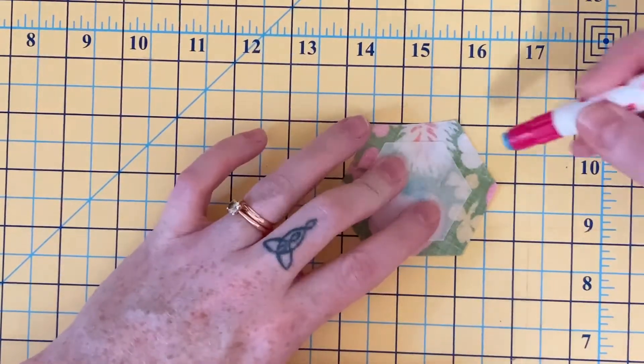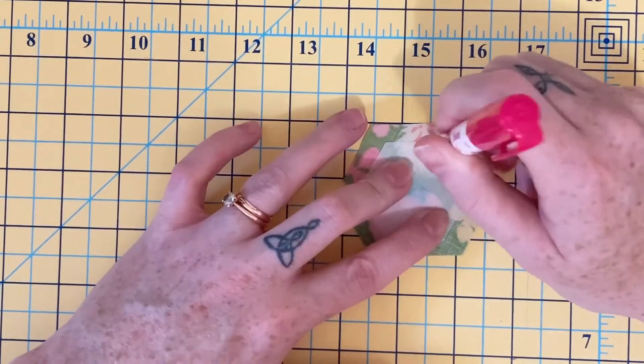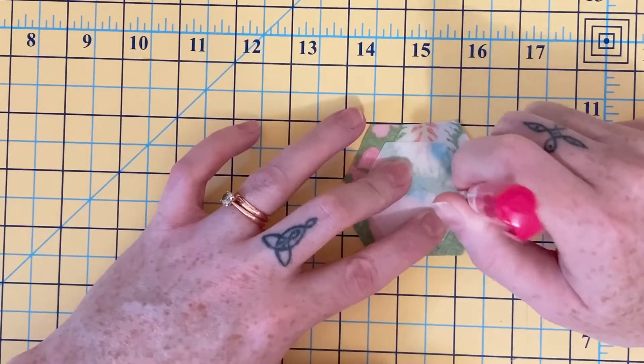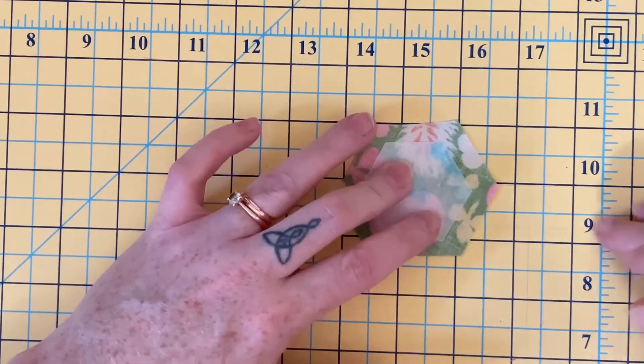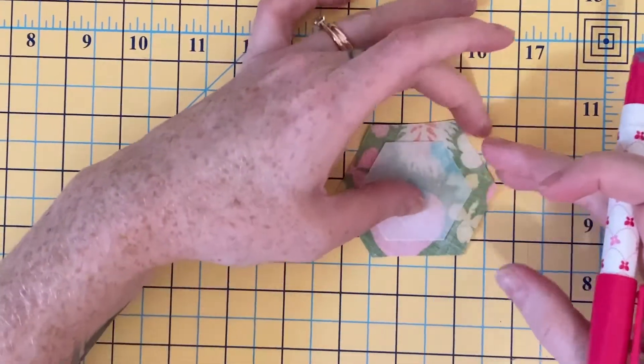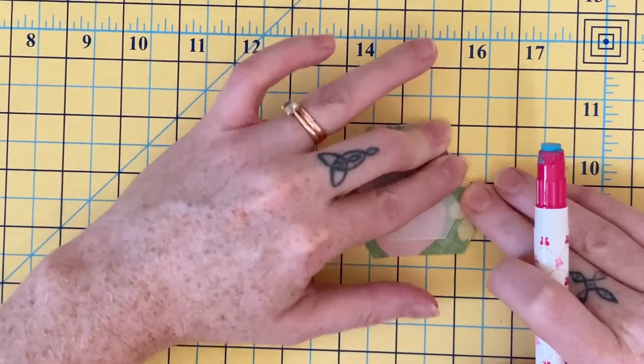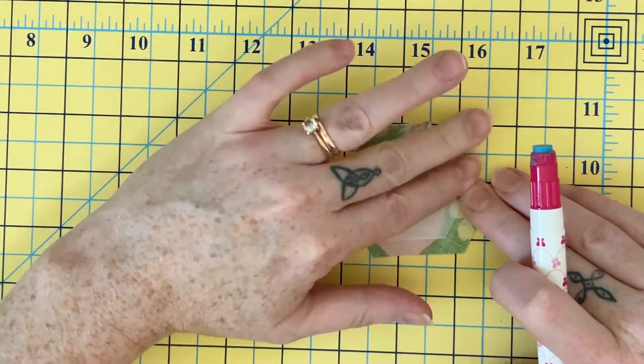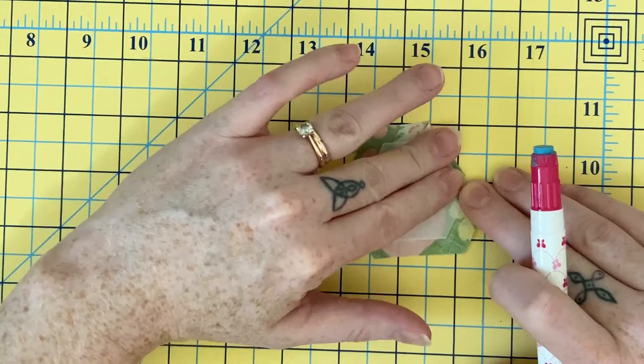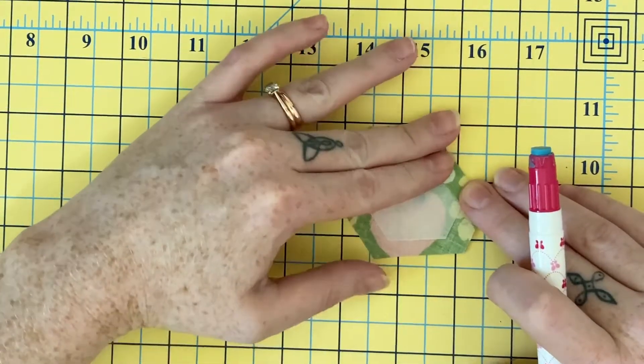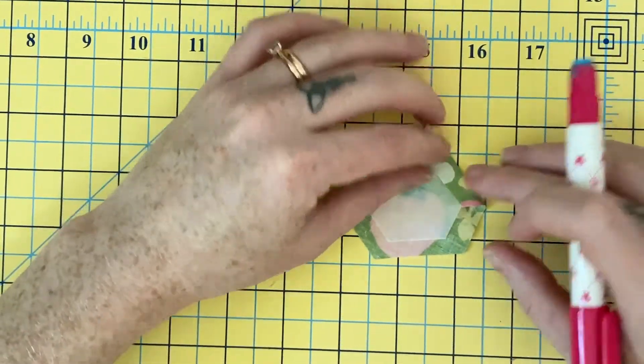Now all I'm going to do here is glue onto the template and then fold it over. You want to find the edge of your template. You're going to try to not fold over the template.